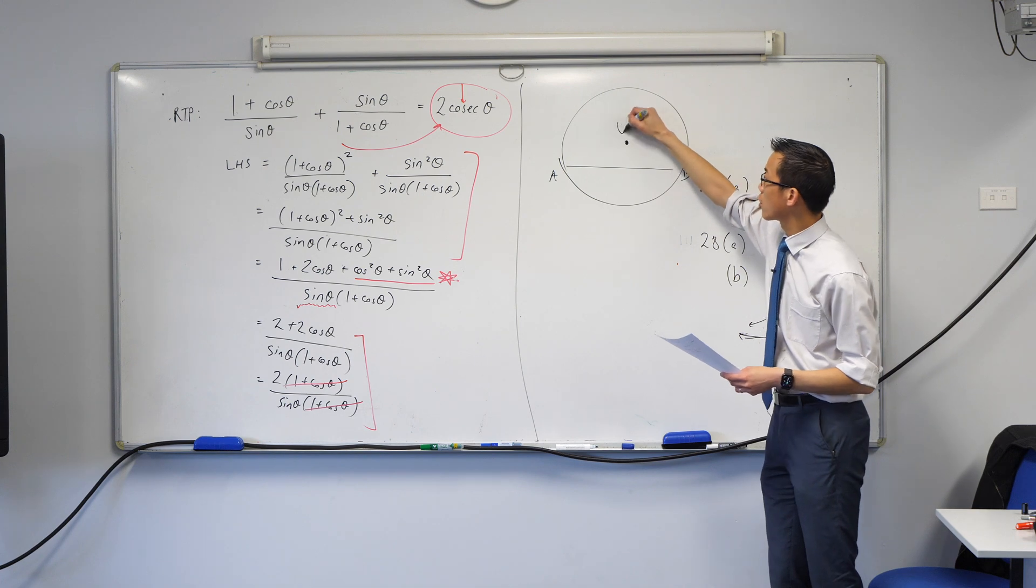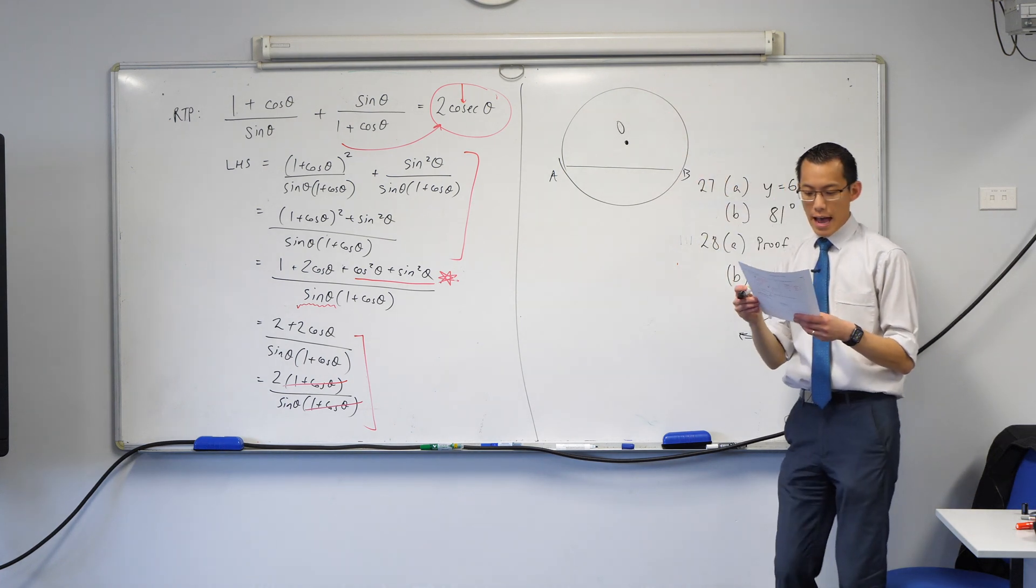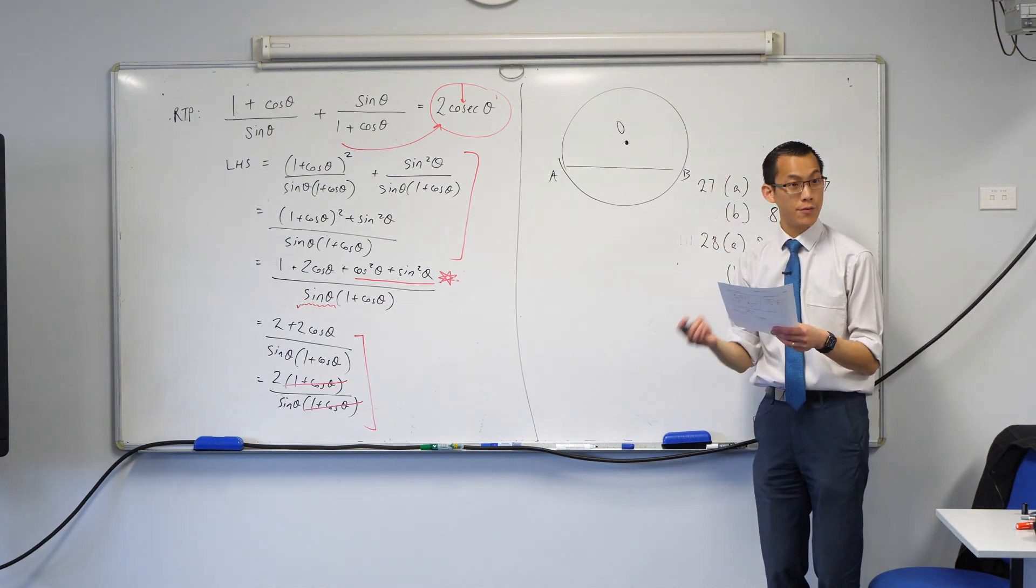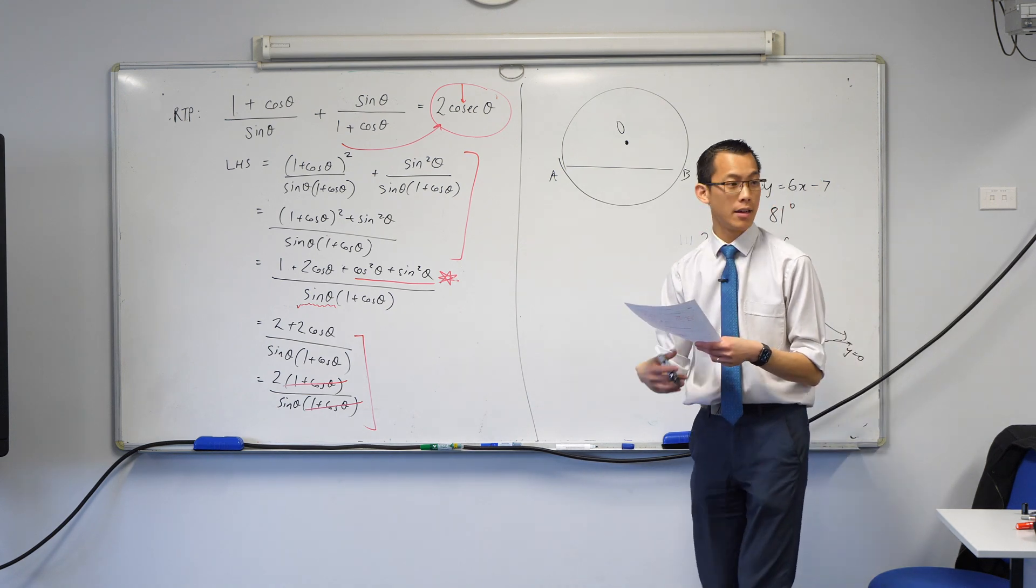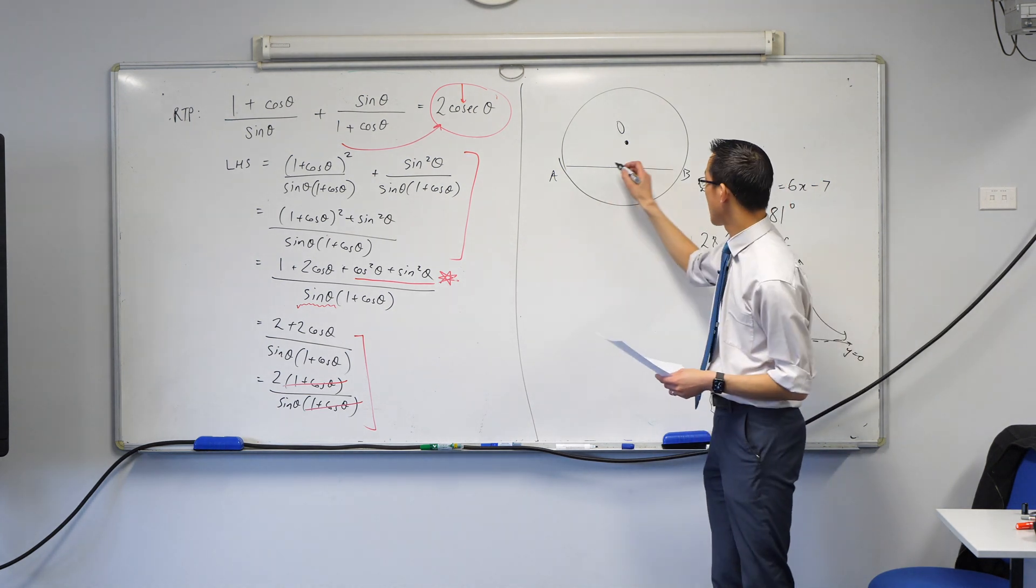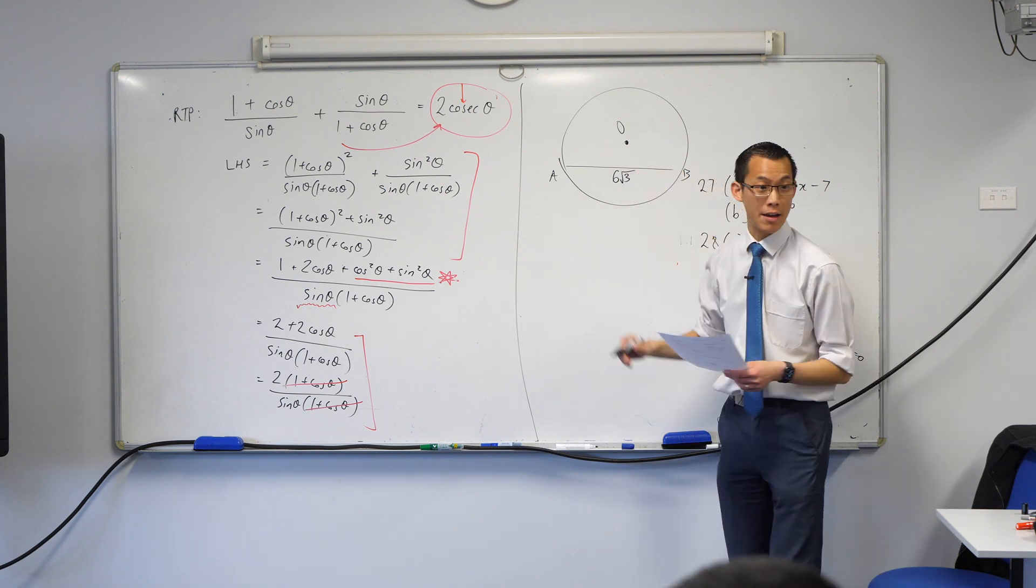Yep, you've got the center of the circle O and then the rest information is provided verbally. So they say AB is a chord of length six root three centimeters. So that's me putting that in right there. Is that okay?